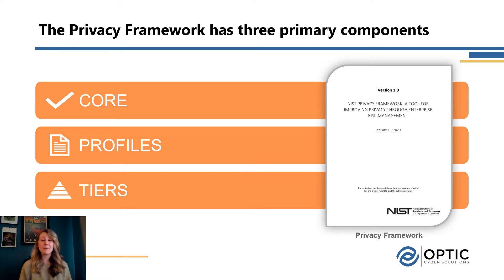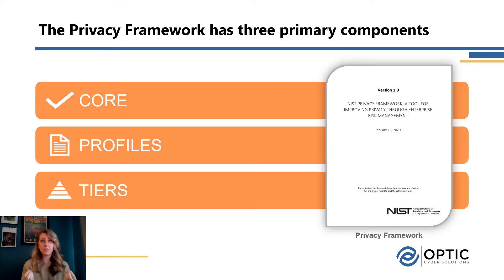If you're familiar with the Cybersecurity Framework that was released back in 2014, or may have watched a previous video we put out on the Cybersecurity Framework, you'll notice that these are quite familiar because it does have the same structure. We have those three same components, and that was created by design because NIST really wanted to make sure that both of these frameworks, while created for different purposes — one for privacy, one for cybersecurity — there's still a lot of overlap and they wanted to make sure that people could use them in parallel as they wanted or use them together if that made sense for your organization.